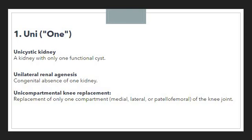The first example is 'unicystic kidney,' which means a kidney with only one functional cyst. If someone is suffering from a unicystic kidney, it means their kidney is functioning on only one cyst. That one functional cyst is represented by the prefix uni. Then we have 'unilateral renal agenesis.'